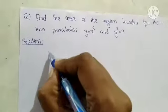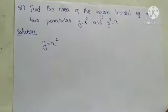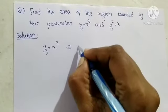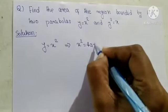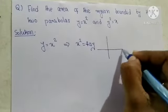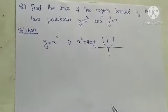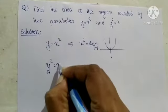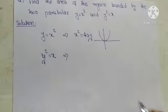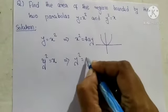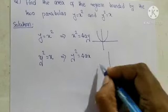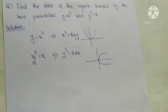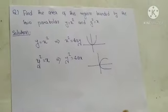We know that y equal to x square is a parabola with general equation x square equal to 4ay. And the next equation is y square equal to x, which is also a parabola with general equation y square equal to 4ax. Here we need to draw the two parabolas for this question.